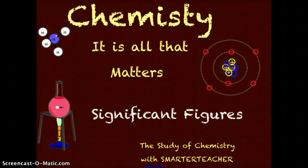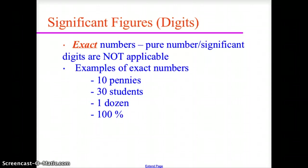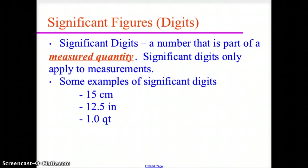Welcome back, and today we're going to go over significant figures or significant digits in chemistry. Significant figures or significant digits are exact numbers — they are pure numbers, and they are not applicable to examples like 10 pennies, 30 students, one dozen, or 100%. Significant figures always have to be a measured quantity, which means it has to have a numeric value and a unit. Examples of significant digits include 15 centimeters, 12.5 inches, and 1.0 quarts.